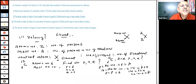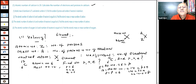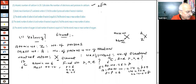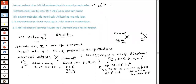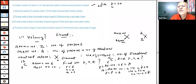Practice question 1: Atomic number of calcium is 20. Number of protons = 20, number of electrons = 20, because the atom is neutral. Practice question 2: Atomic mass of aluminum is 27 u and atomic number is 13. Number of protons = 13, number of neutrons = 27 − 13 = 14, number of electrons = 13.